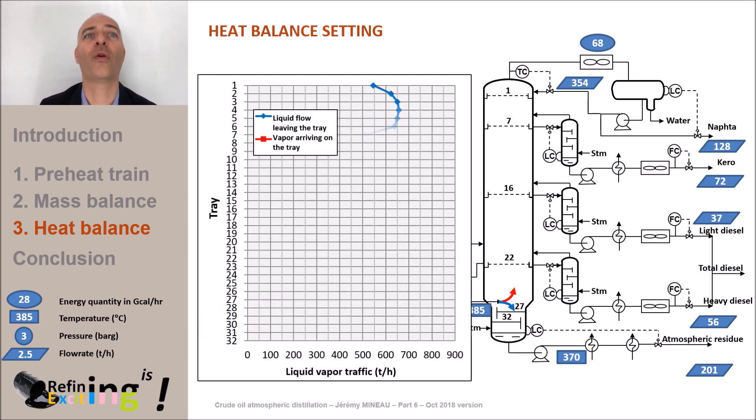The blue curve corresponds to the flow of liquid leaving the tray, while the red curve corresponds to the flow of gas arriving on the tray. To put it simply, we see that the gas that enters the feed tray rises in the column. Once this gas flow arrives in the overhead system, the gas is condensed. Then, a part is withdrawn, it is the naphtha. The remaining liquid is the reflux flow that is re-injected into the column.